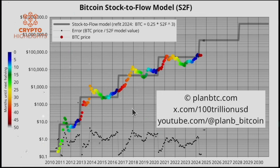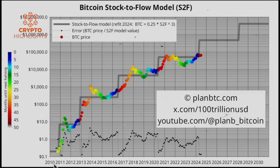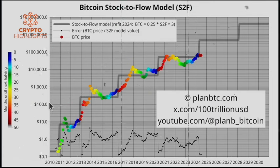Start with the first chart: stock to flow. Forget everything you know about stock to flow — just look at the chart and see what it tells you. On the x-axis, there's the date from 2010 to today, 2024. On the y-axis, there's the price of Bitcoin. Note it's on a log scale — a logarithmic scale.